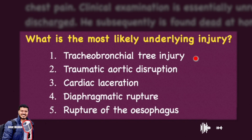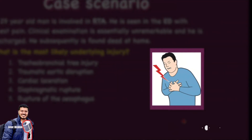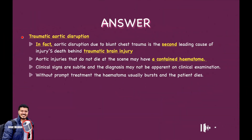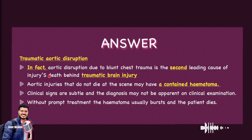The options are: tracheobronchial injury, traumatic aortic disruption, cardiac laceration, diaphragmatic rupture, or rupture of the esophagus. The main presentation is chest pain. Middle-aged patient, RTA, emergency department, chest pain, unremarkable clinical examination, discharged, then dead at home. The answer is traumatic aortic disruption.